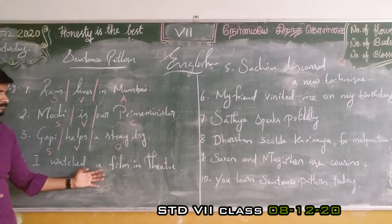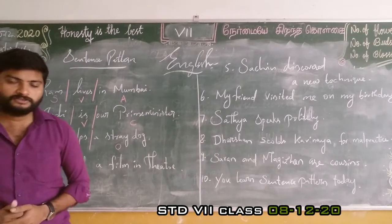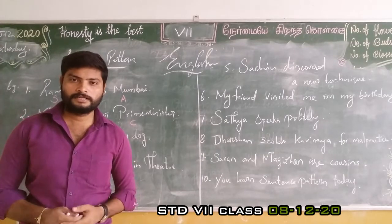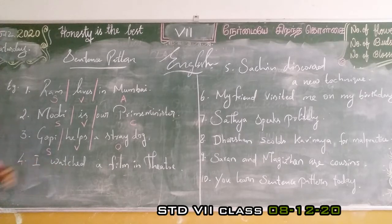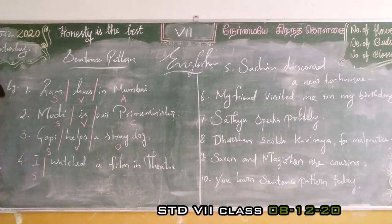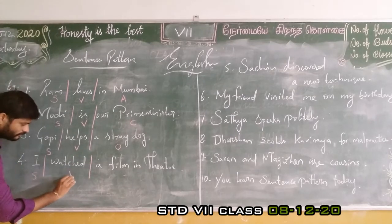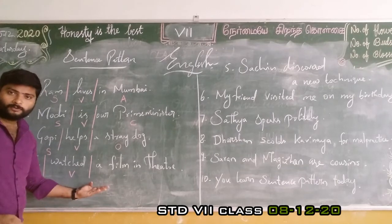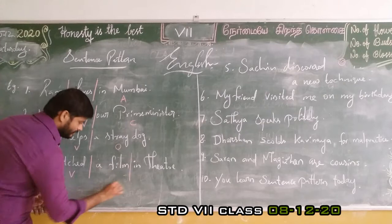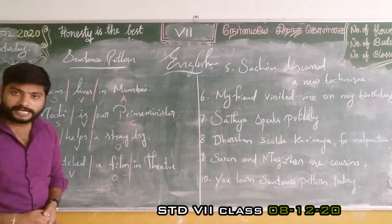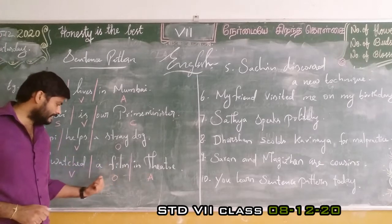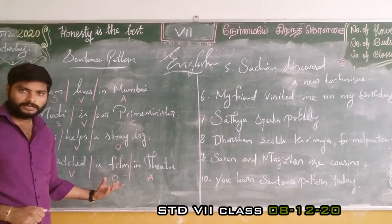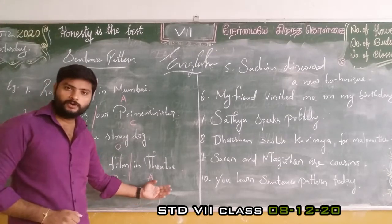Fourth sentence: 'I watched a film in theatre.' I is subject, 'watched' is verb. 'A film' answers the question 'what' — so it is object. 'In theatre' answers the question 'where' — so it is adjunct. What denotes the object; where denotes the adjunct.